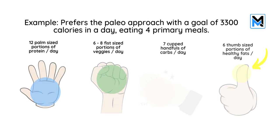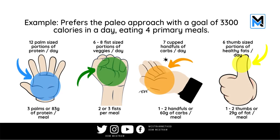This is something I've done myself and we help our clients use as a way to work these things out. For example, this is a particular client who has a performance goal — they train quite regularly and prefer a paleo approach. Their target is around 3,300 calories a day from four primary meals. Based on their palm size, that's 12 palm-sized portions of protein in a day.